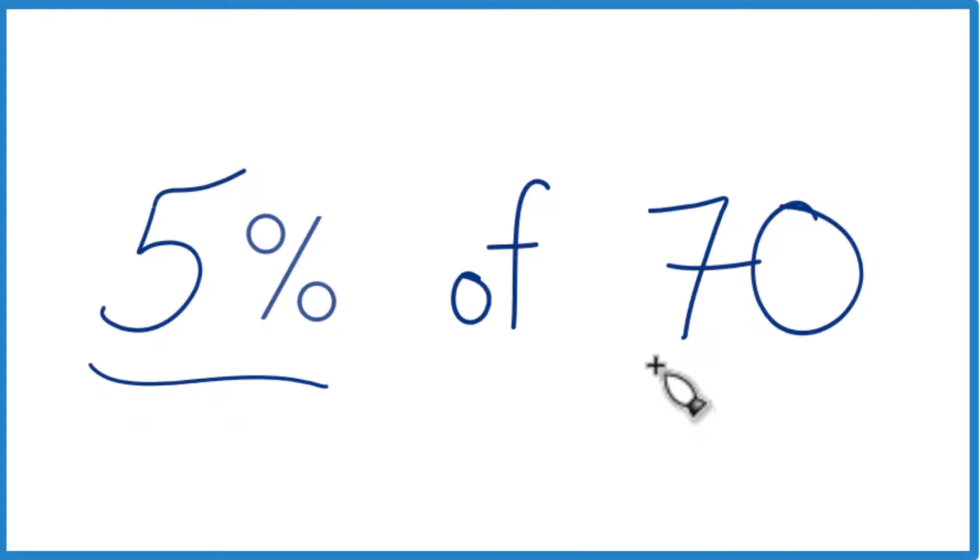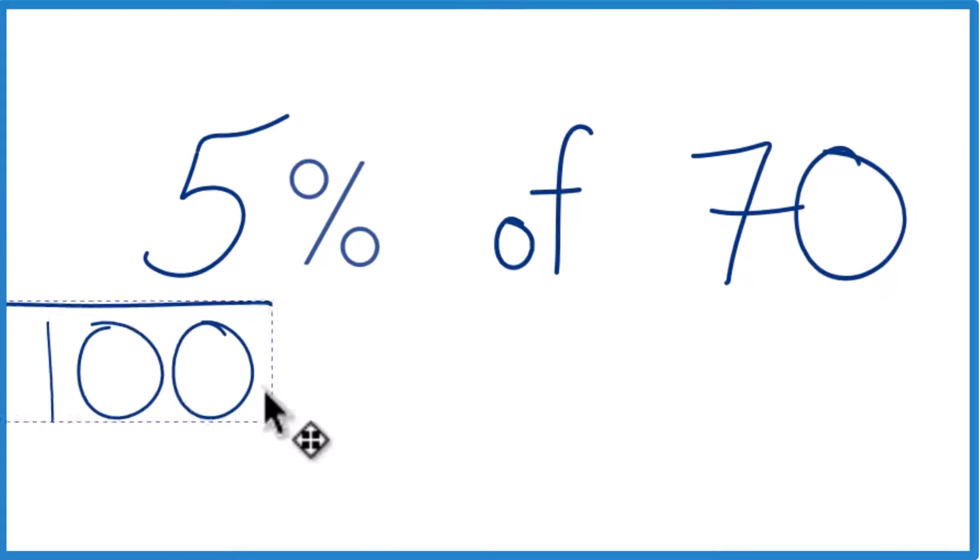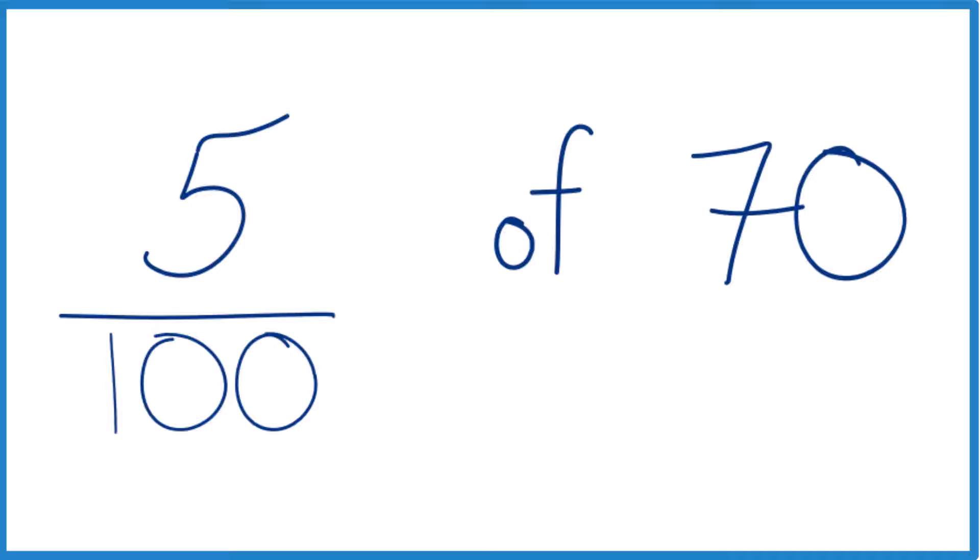Here's how you can find 5% of 70. When we think of 5%, it's helpful to think of 5% as 5 over 100. That's 5%.